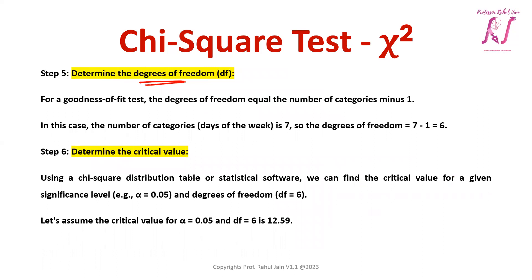Step 5 is to determine the degree of freedom. In a goodness of fit test, the degree of freedom equals the number of categories minus one. We have seven categories (days), so the degree of freedom is 7 − 1 = 6.